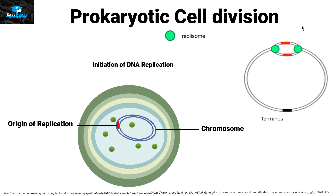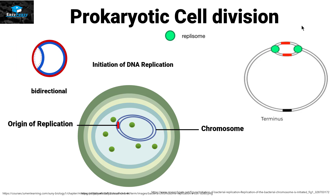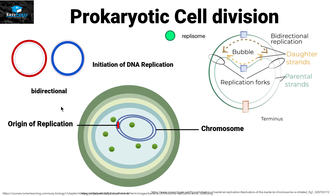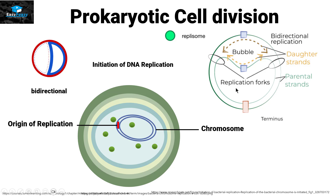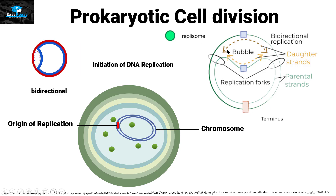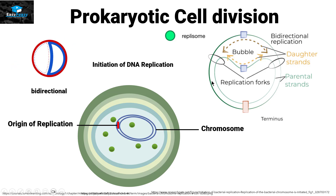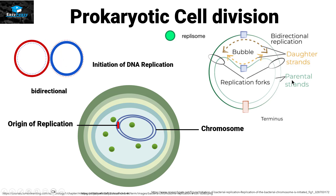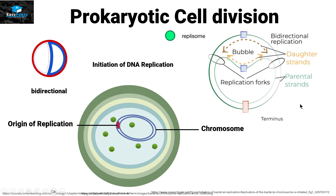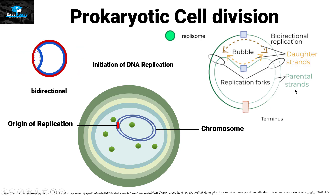Replication in prokaryotes is bi-directional. This picture shows how the bi-directional replication works — the dotted lines represent the new daughter strands, and the solid lines show the parent strands. They are simultaneously replicating the DNA in the prokaryote.